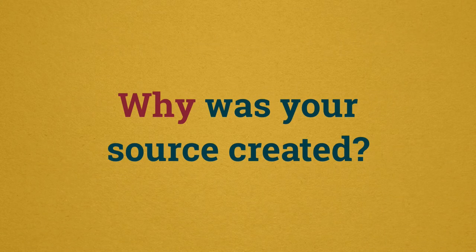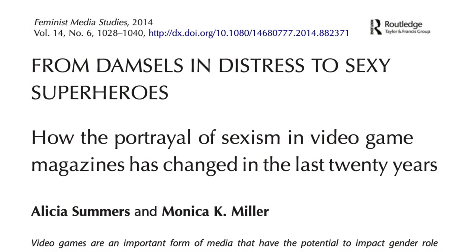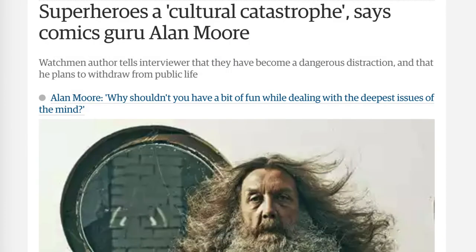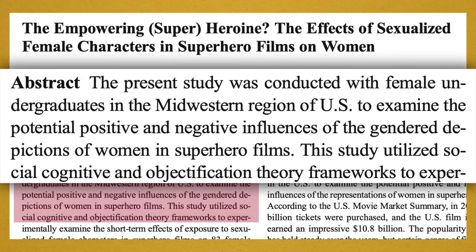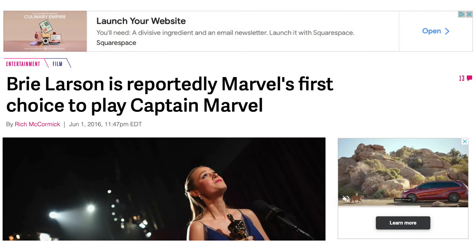Why was your source created? What is its purpose? Is it to present scholarly research? To inform? Persuade? Is it an opinion? Why something was created can be as important as the content in the source. For example, scholarly articles are usually created to share scholarly research. News articles can share facts or opinions, but are also created to sell advertising on the news site.